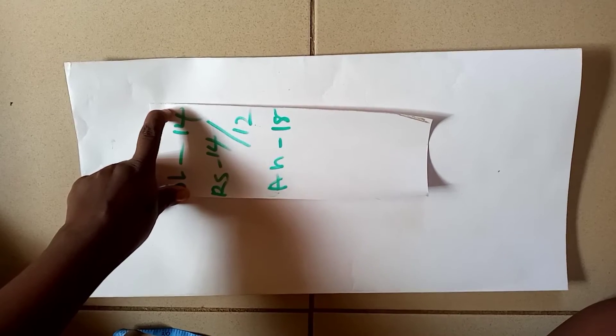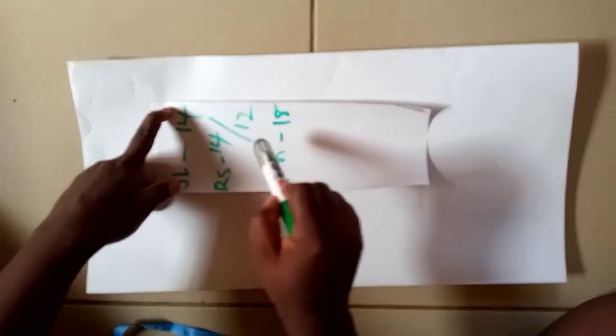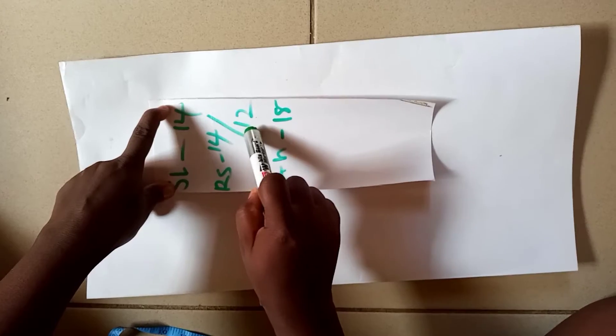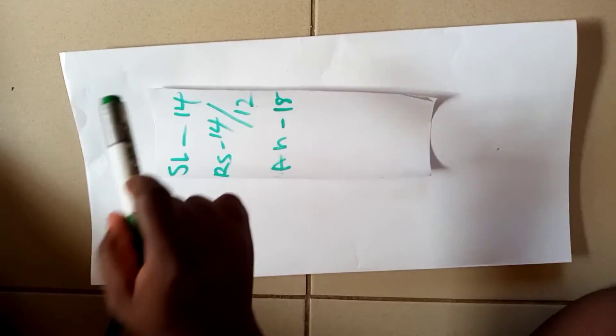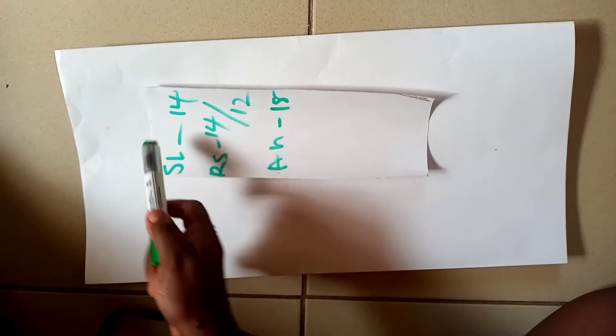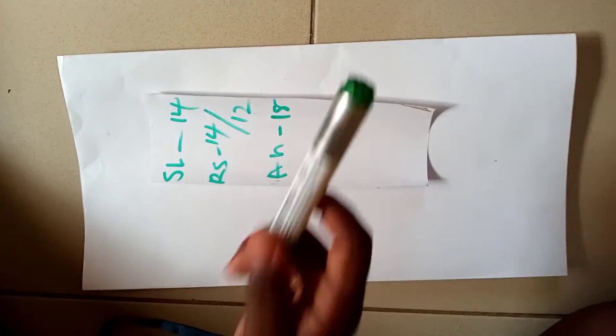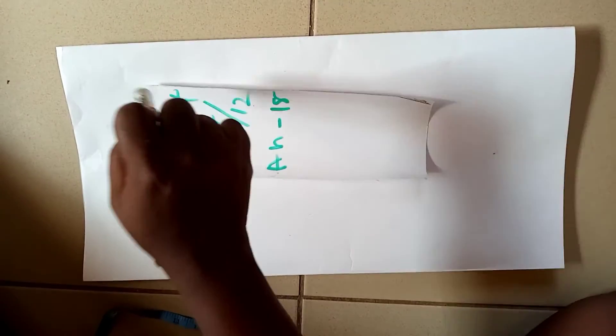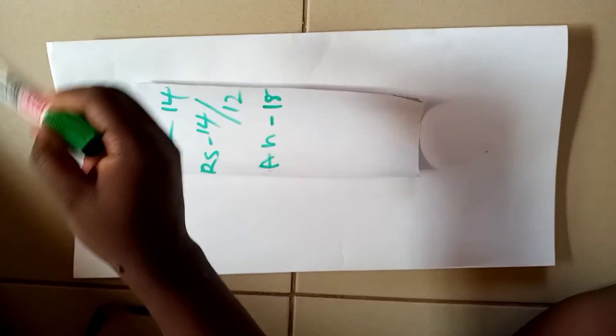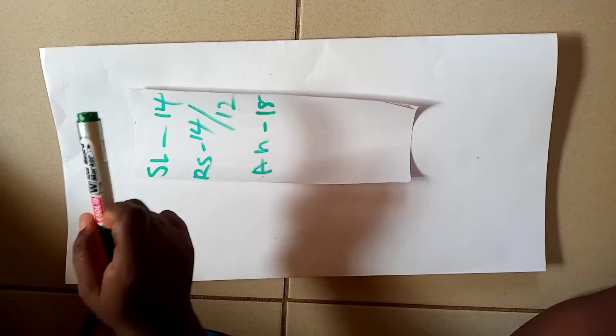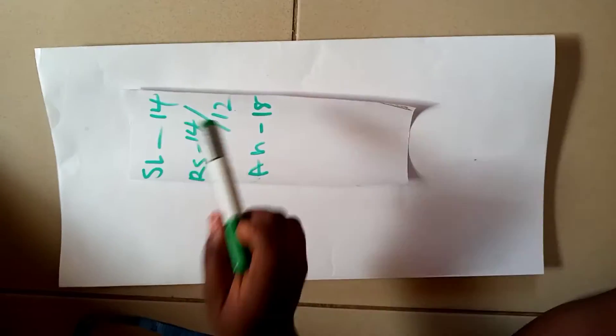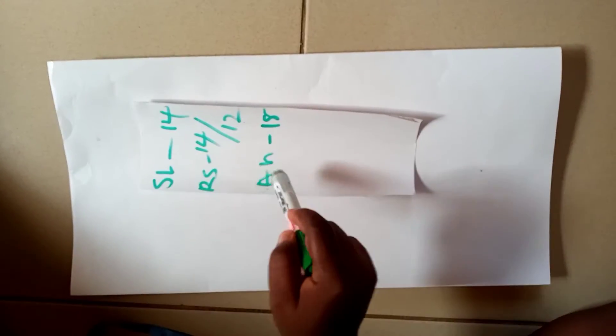Then this 12 inches is representing the circumference of where you want your sleeve to stop. For instance, in your hand now, if you place your tape, 14 inches is the round circumference of that place. The place your sleeve is stopping, that is the 12 inches.